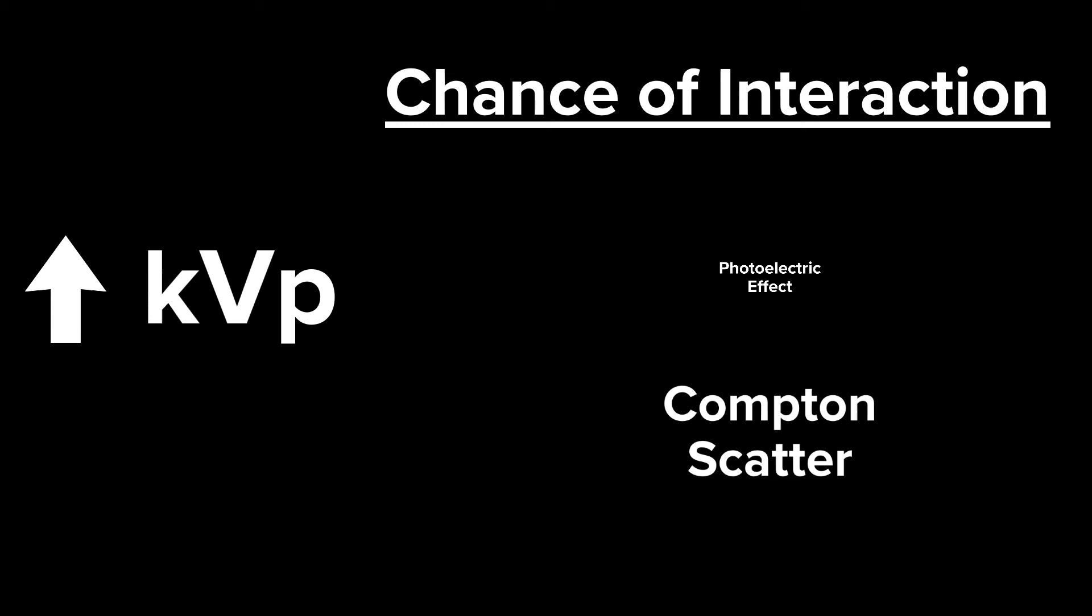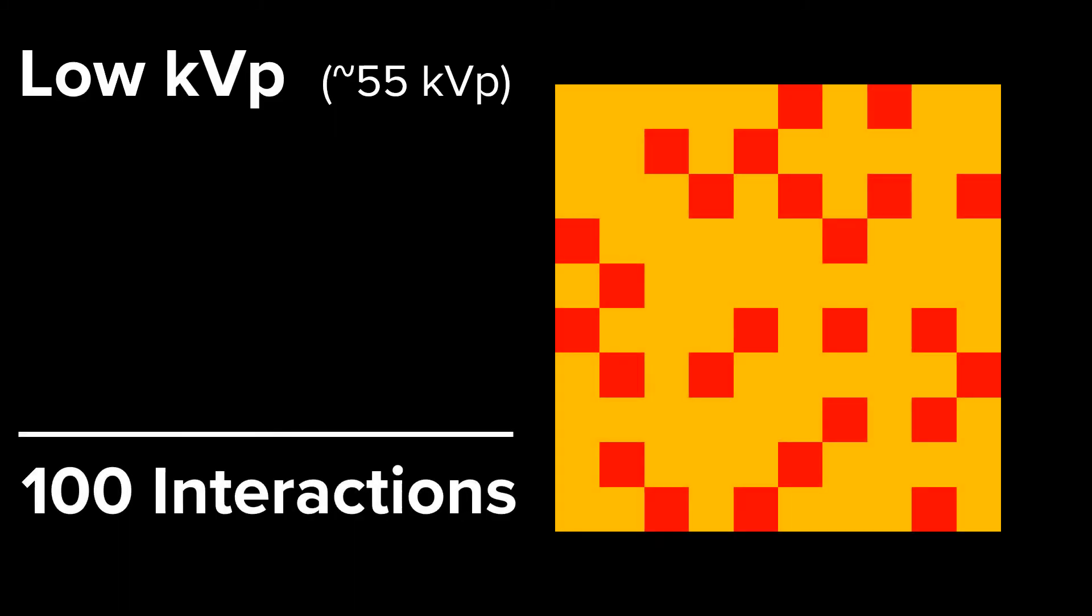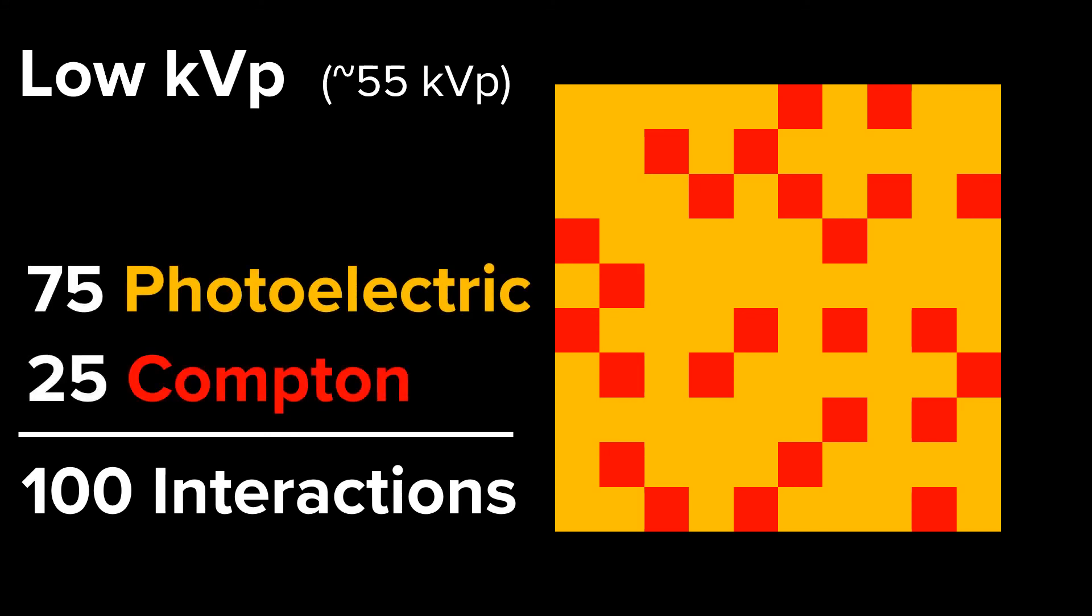Let's do a demonstration. First, we'll look at low KVP range. Here, we have 100 squares, 75 are yellow and 25 are red. The yellow will represent a photoelectric interaction, and the red will represent a Compton interaction. Here, we're getting a ton of interactions, but the majority are photoelectric, which provides diagnostically relevant information. We're getting some scatter radiation from Compton interactions, but not too much.